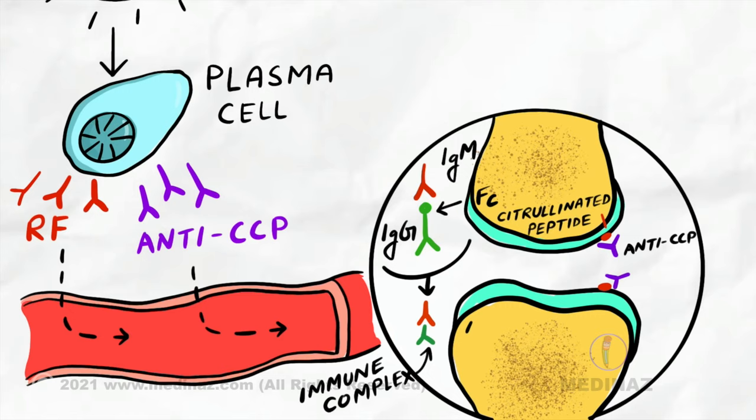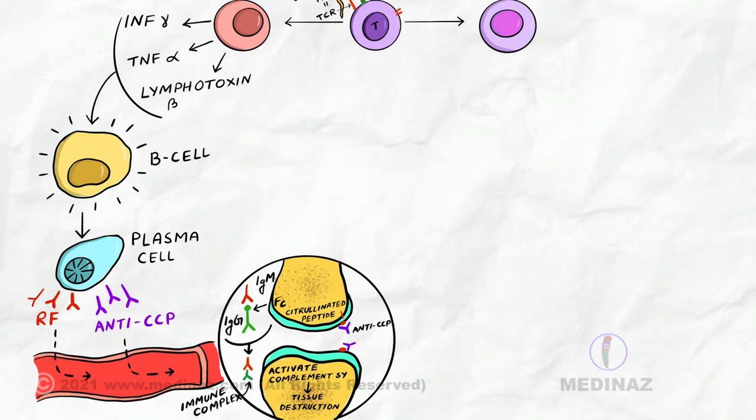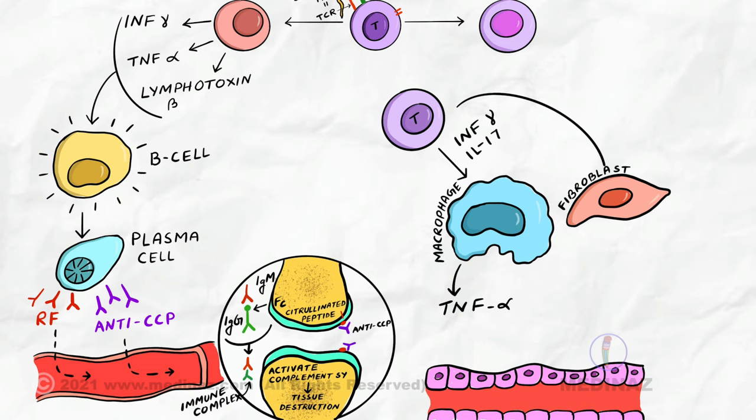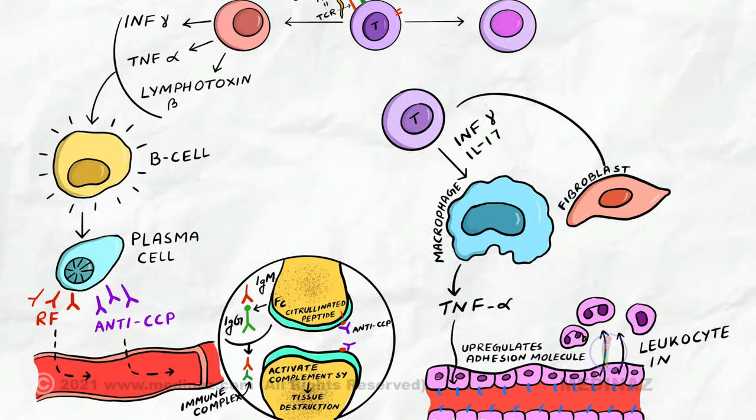Now, they activate complement system and destroy the local tissue. In the meantime, T helper cells stimulate synovial macrophage and fibroblast to secrete pro-inflammatory mediators. One of them is tumor necrosis factor-alpha. TNF-alpha upregulates the adhesion molecules on the endothelial cells and promote leukocyte influx into the joint.